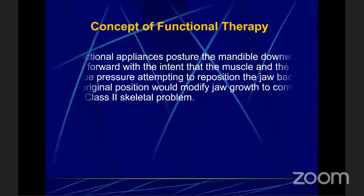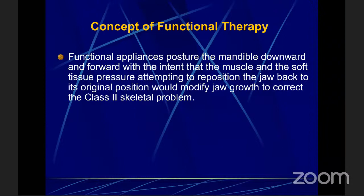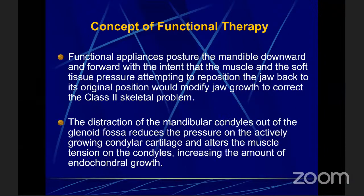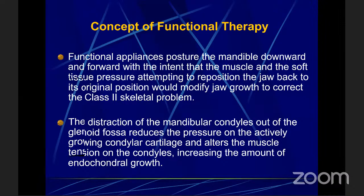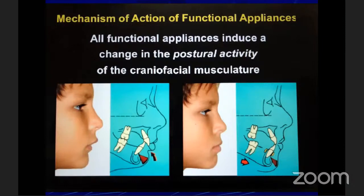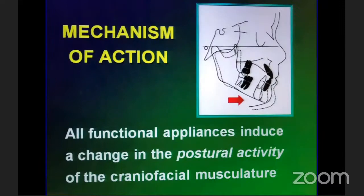The concept of functional therapy: functional appliances basically posture the mandible downward and forward with the intent that the muscles and soft tissue pressure attempting to reposition the jaw back to the original position would modify jaw growth to correct the Class 2 skeletal pattern. This distraction of the mandibular condyles out of the glenoid fossa reduces the pressure on the growing condylar cartilage and alters the muscle tension on the condyles, increasing the amount of endochondral growth. All functional appliances induce a change in the postural activity of the craniofacial musculature when we bring the mandible forward.